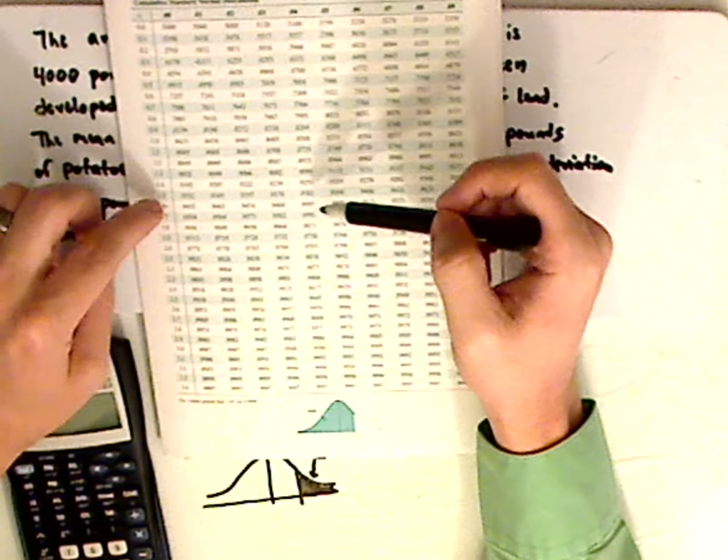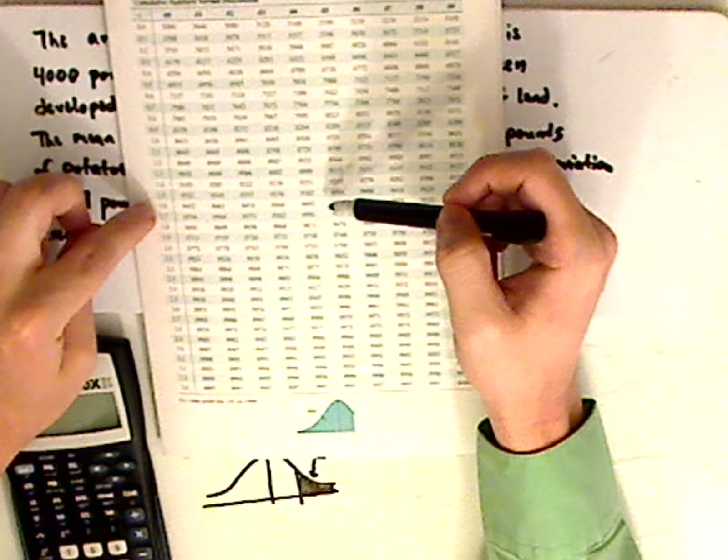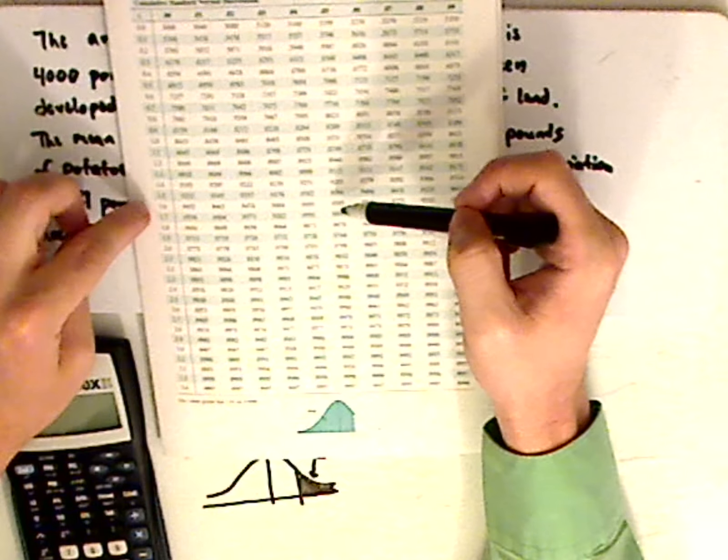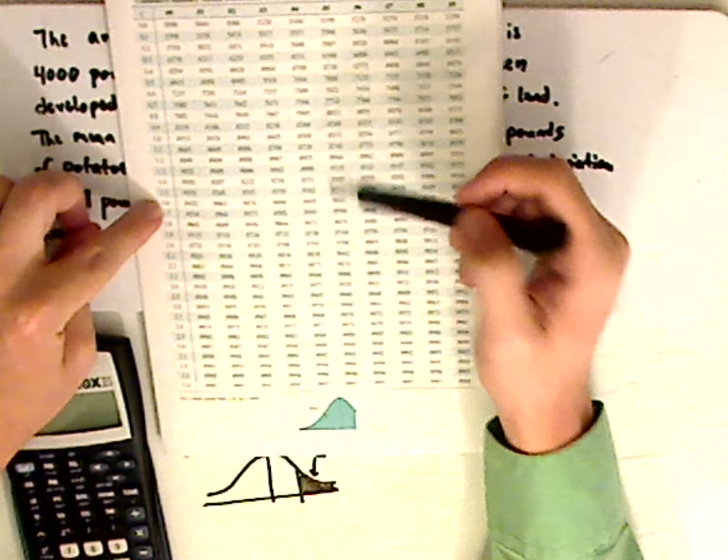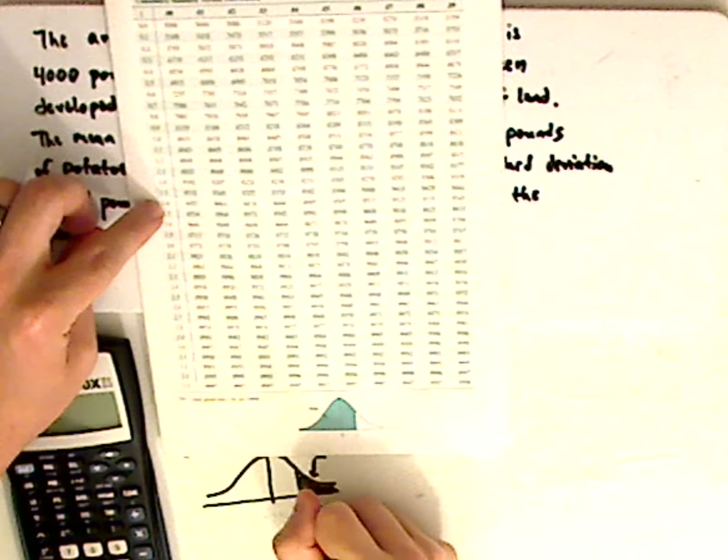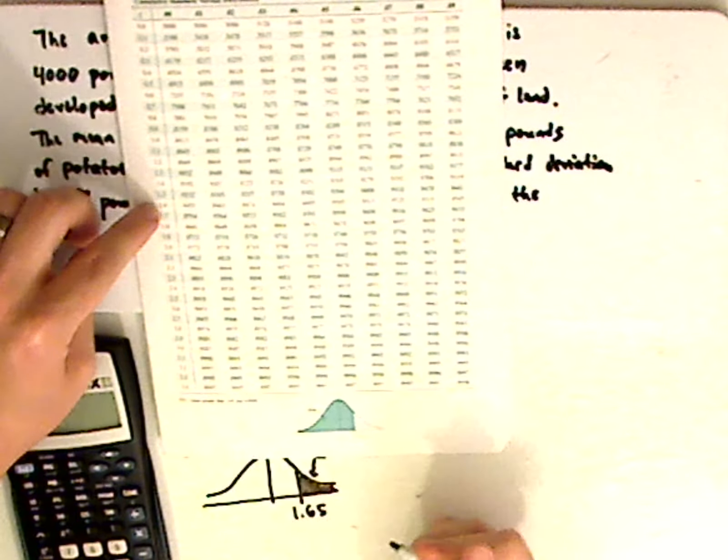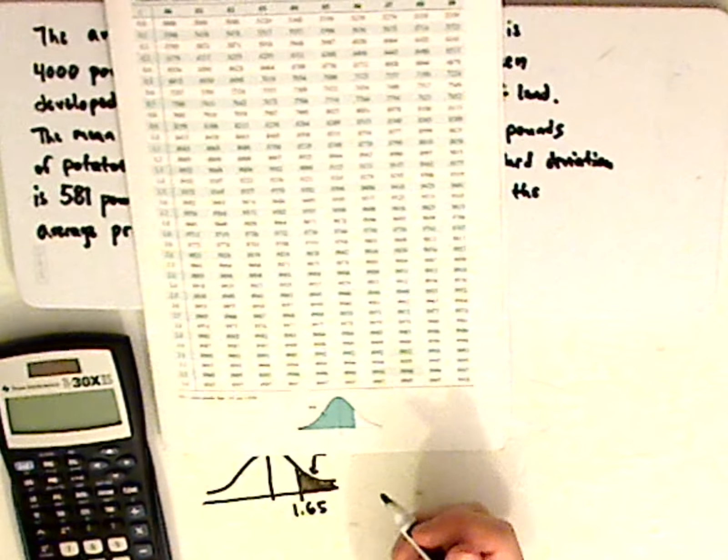Find whatever's close, and what's close is 0.9505. So my z-score would be 1.65, and that would be my critical value.